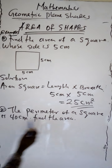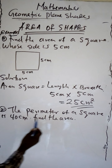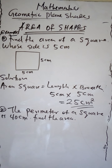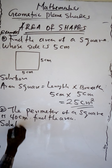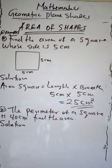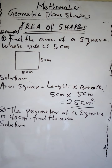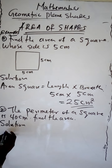Example 2: The perimeter of a square is 40 cm. Find the area. As we are aware, a square has all four sides equal. To calculate the perimeter of a square.